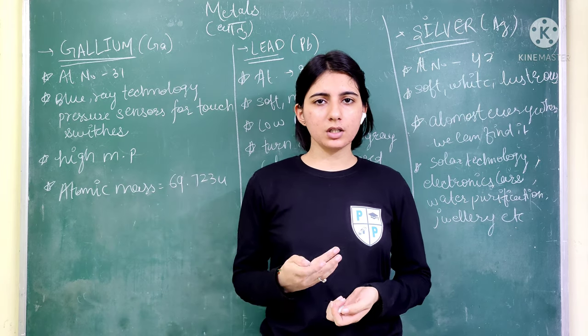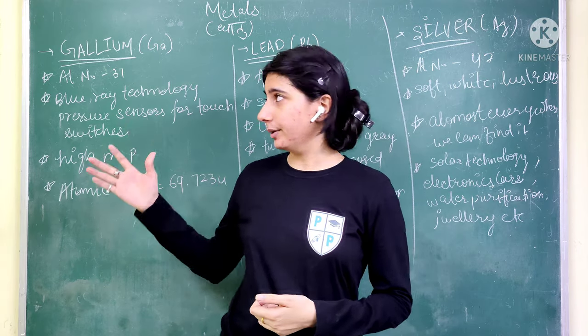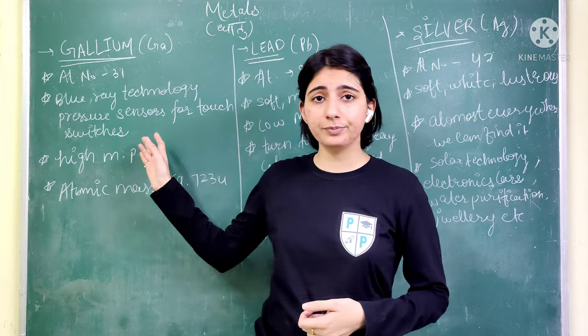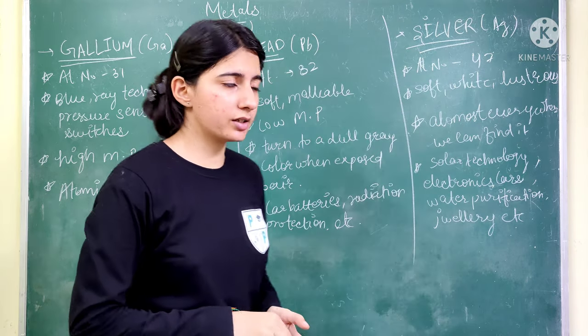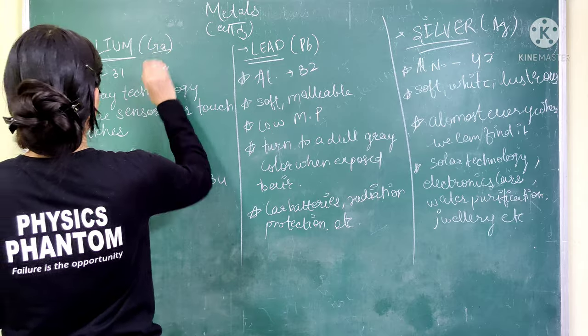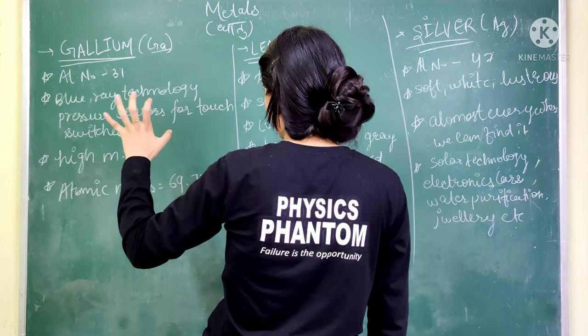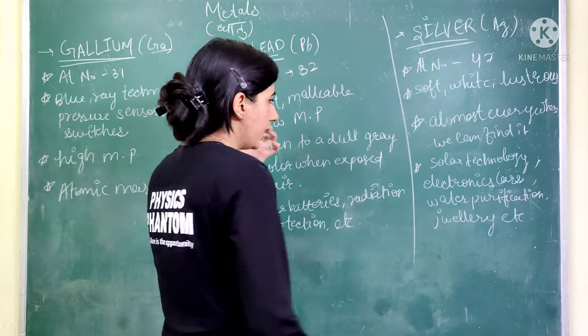Now, the first metal is gallium. Gallium is denoted by Ga. You can see the symbol here. The gallium symbol is Ga, and its atomic number is 31.